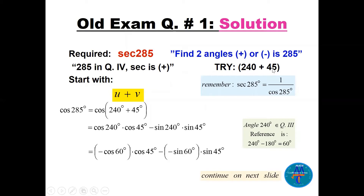45 is a special angle and 240 is a multiple of 60. Remember that secant of 285 is one over cosine of 285, so let's find cosine of 285 first, then take the reciprocal. We write cosine(240 + 45) as u plus v and apply the formula: cosine(240)·cosine(45) minus sine(240)·sine(45).